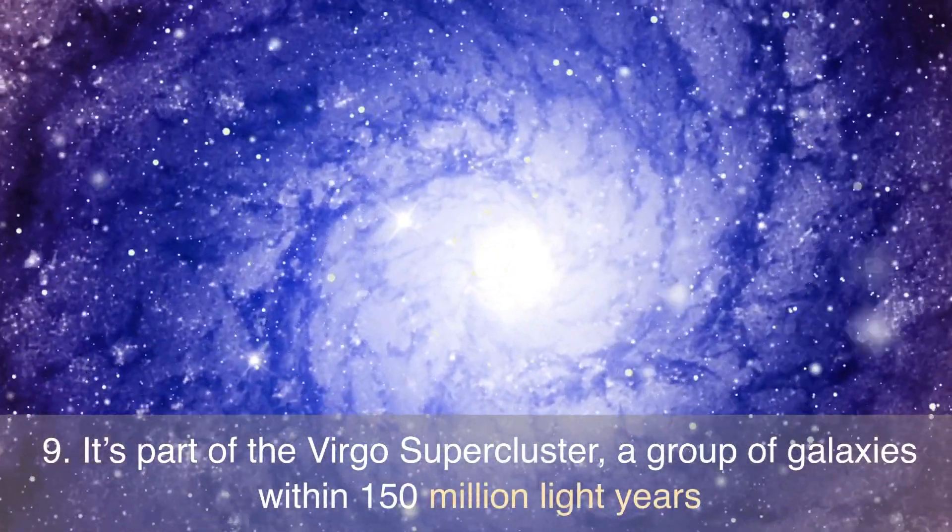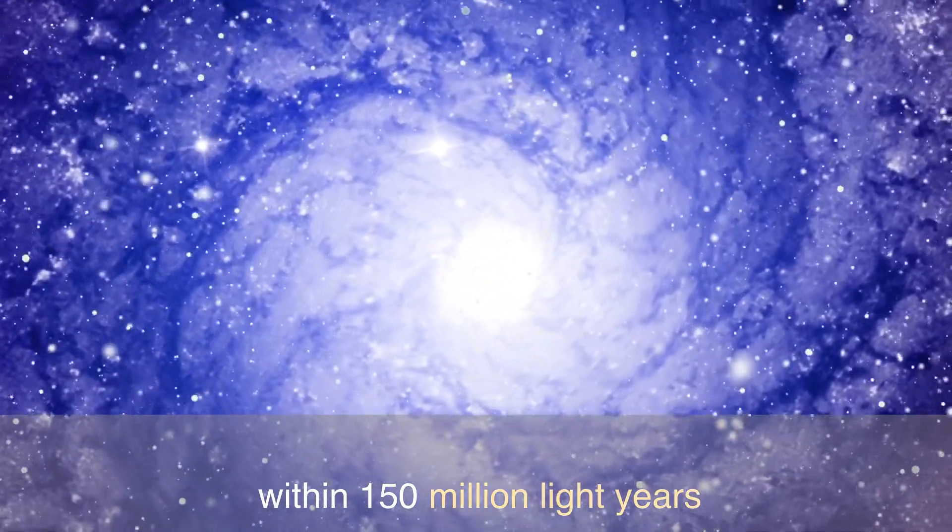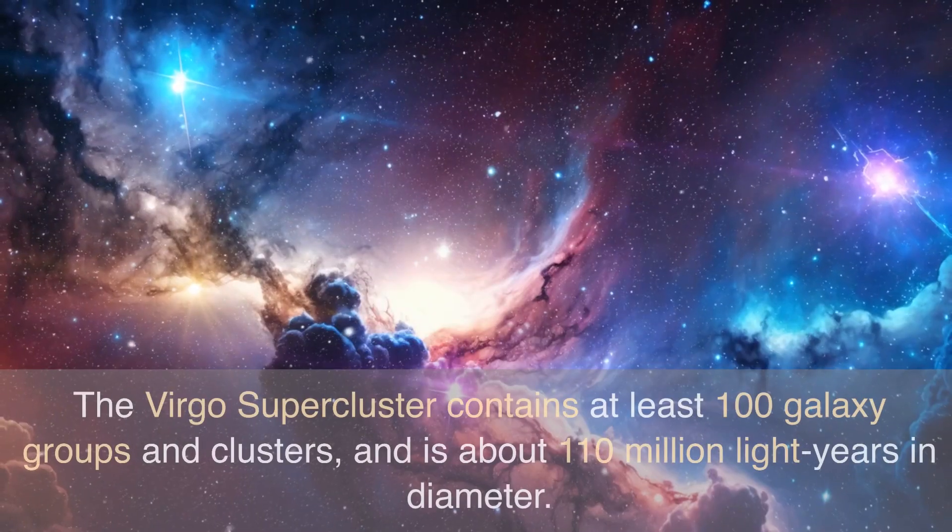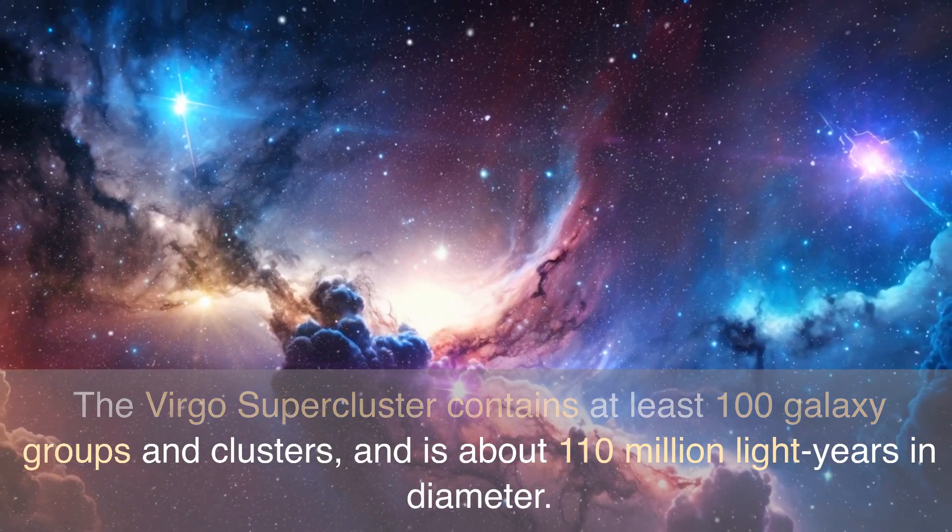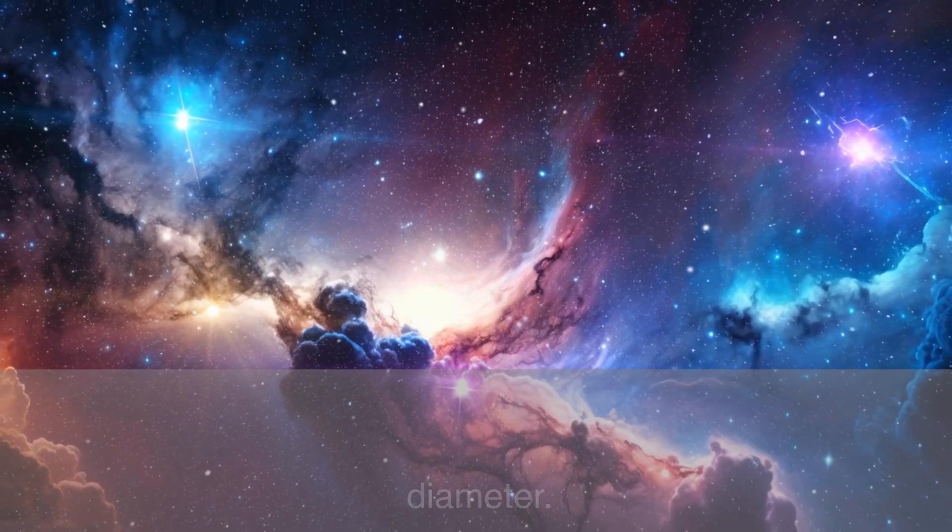Number 9: It's part of the Virgo supercluster, a group of galaxies within 150 million light-years. The Virgo supercluster contains at least 100 galaxy groups and clusters, and is about 110 million light-years in diameter.